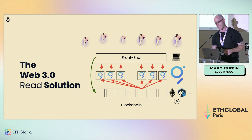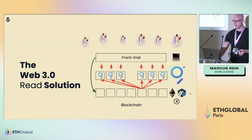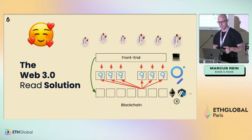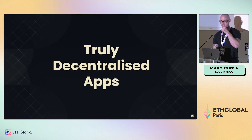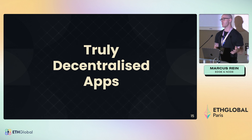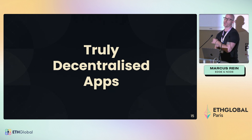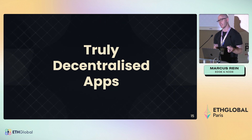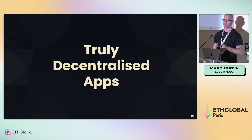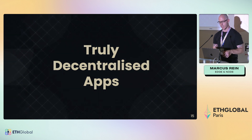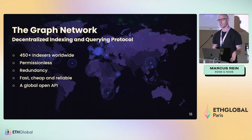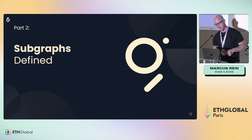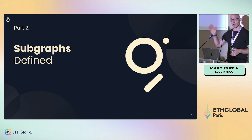All working permissionlessly through the tokenomic system of The Graph. It provides a foundation for truly decentralized apps — if you need indexing and want decentralization with security guarantees, incredible speed, and uptime, that is The Graph network. 450 indexers worldwide: permissionless, redundant, fast, cheaper, reliable, and a global API.